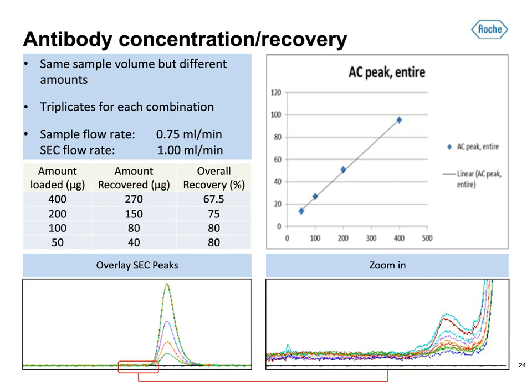In order to see if the method is robust and allows large enough quantities to be purified, the titer of the supernatant was adjusted by diluting it with conditioned medium. The same sample volume was used three times for each condition with a run time of 60 minutes. The table shows that the higher the titer, the lower the recovery, but still within an acceptable range. The binding capacity of the column has not yet been reached, and quantities greater than 400 micrograms can be loaded. The triplicates were all very close together, indicating that the system is robust and gives reproducible results, with nice separation between aggregates and monomers.